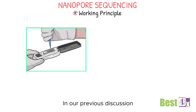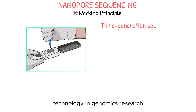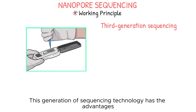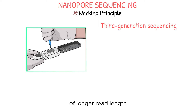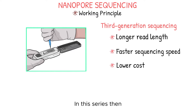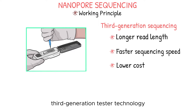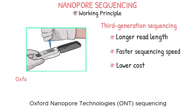In our previous discussion, we understood the importance of sequencing technology in genomics research. This generation of sequencing technology has the advantages of longer read length, faster sequencing speed, and lower cost. In this series, we'll take a deep look at another major approach to 3rd generation sequencing technology: Oxford Nanopore Technologies, or ONT, sequencing.